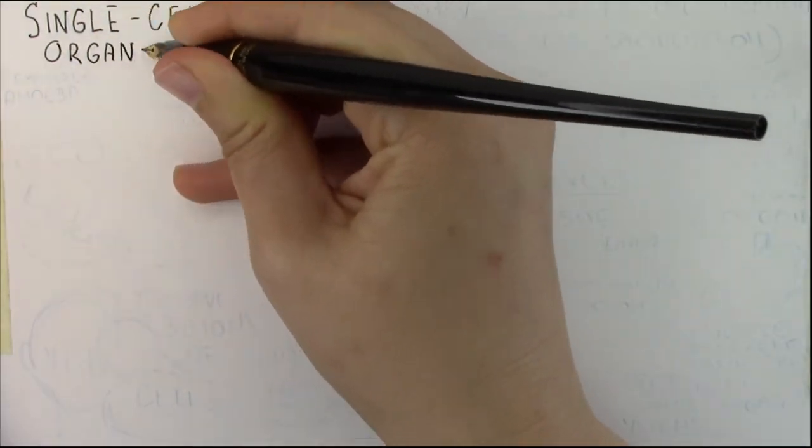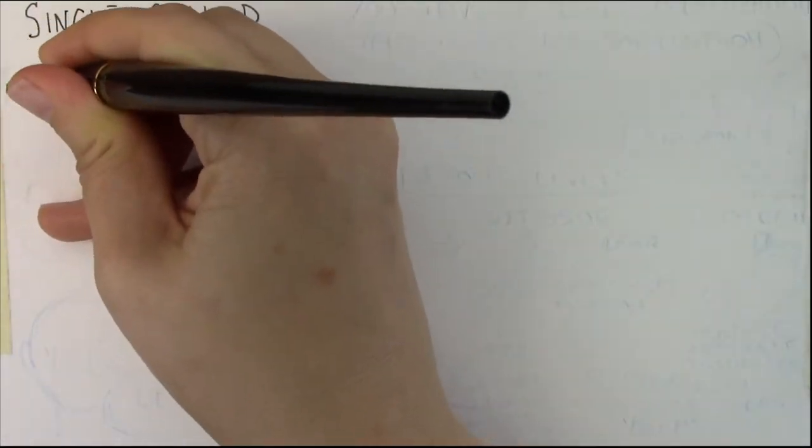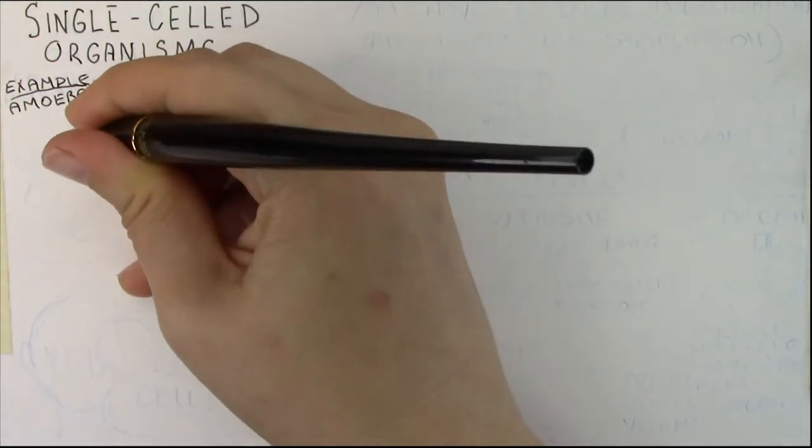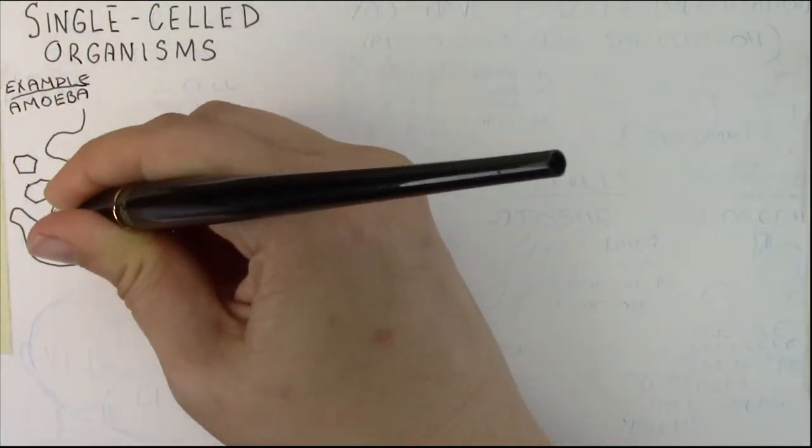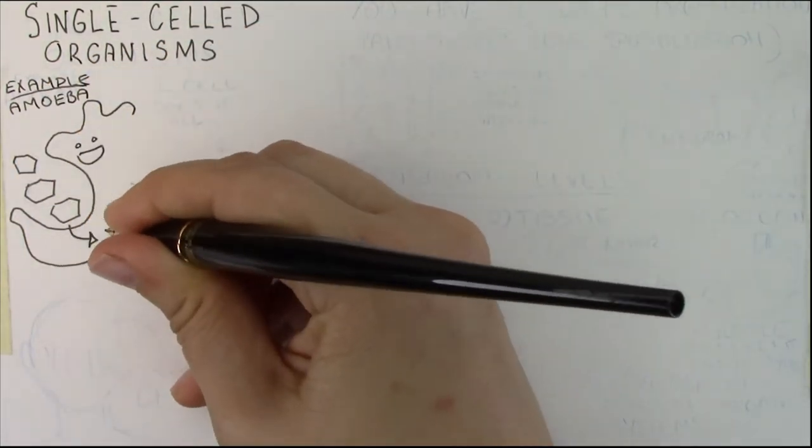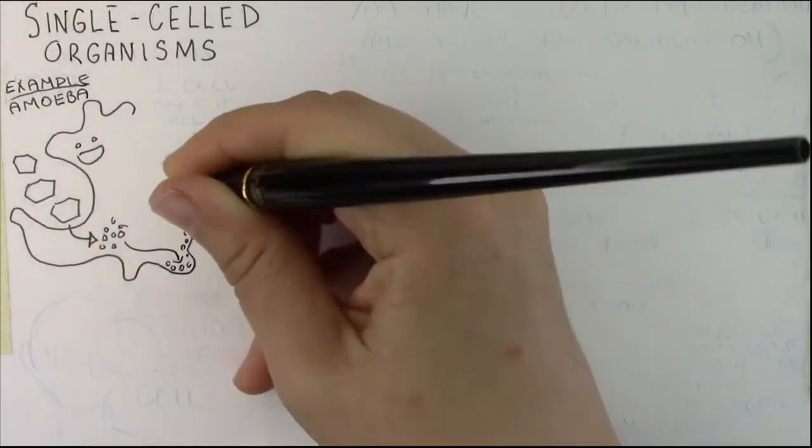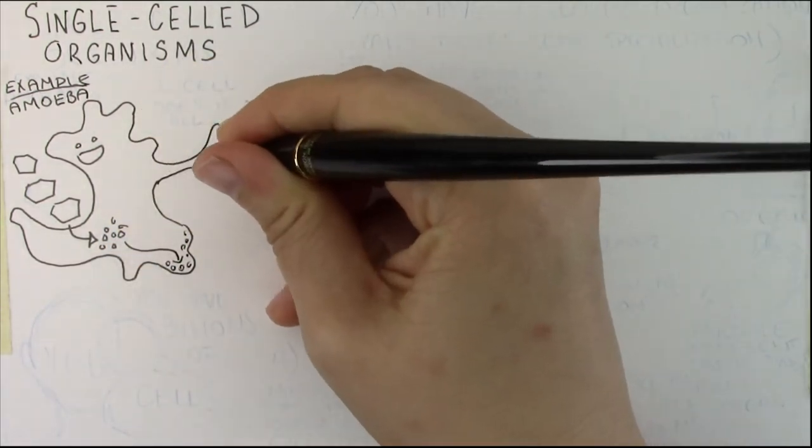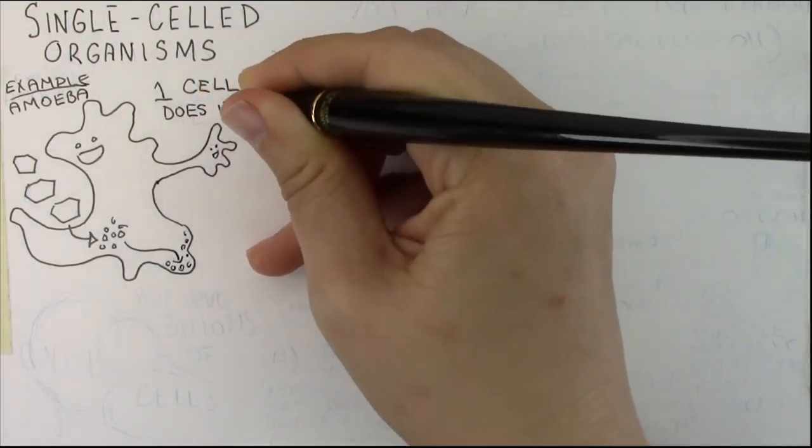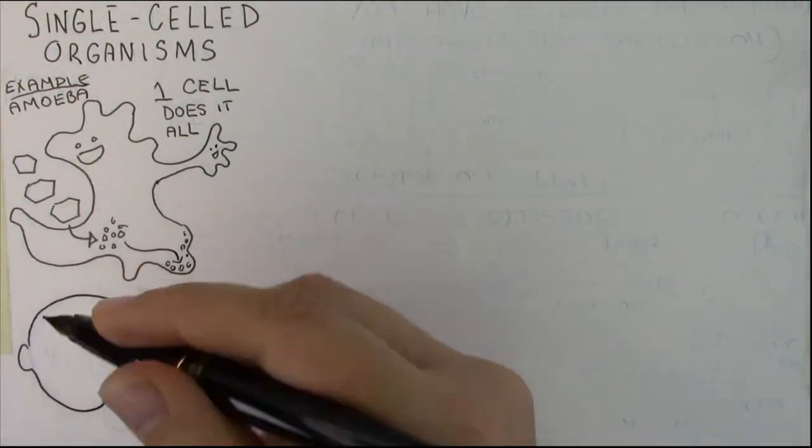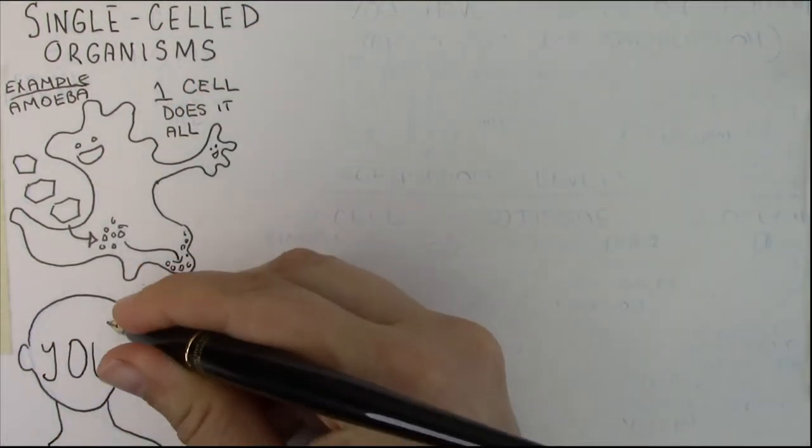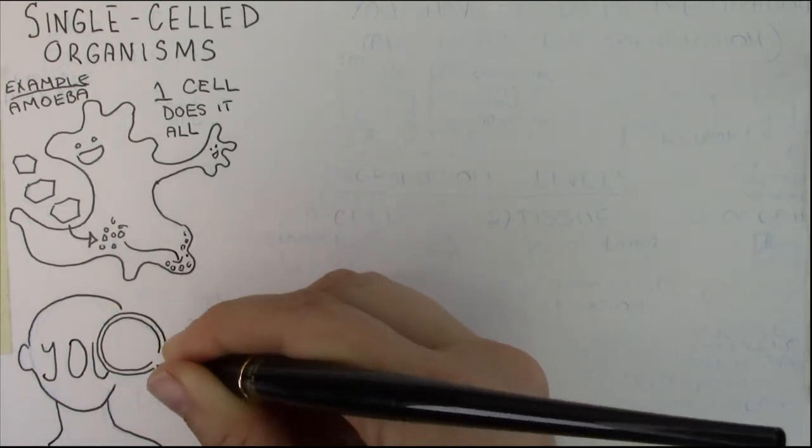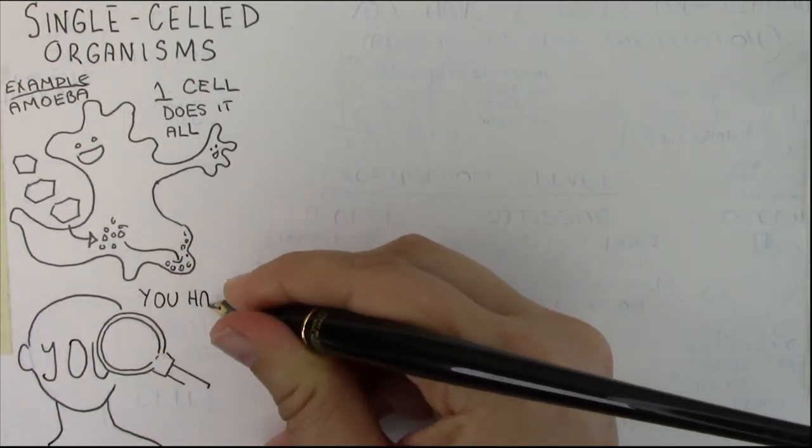So quite a few organisms on this planet only have one cell. Again, we call these single-celled life. Common examples would be something like this amoeba that you see here. This is an organism that since it has only one cell, that one cell does everything. It carries out all the taking in of nutrition and energy. It does all of the building of new components. It does all the reproduction. Everything is happening in that one cell.